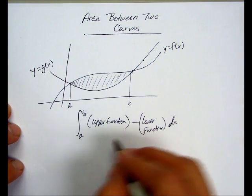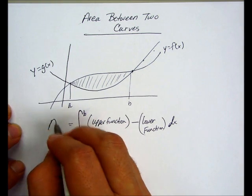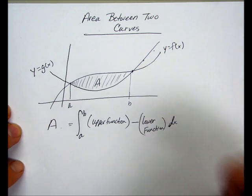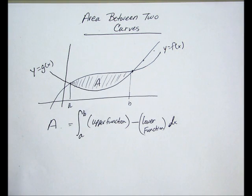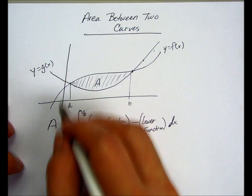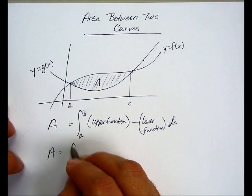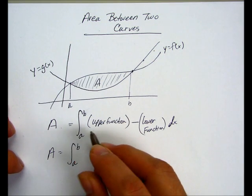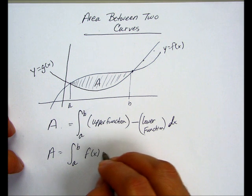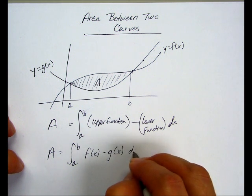and this is going to give me the area between the two curves, or this region, the area of that region. So in this example here, the area of this region is going to be from a to b of f of x minus g of x dx.